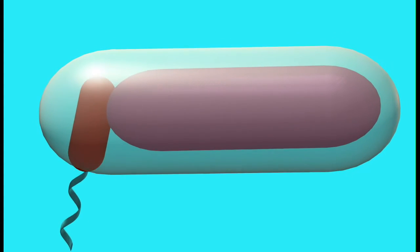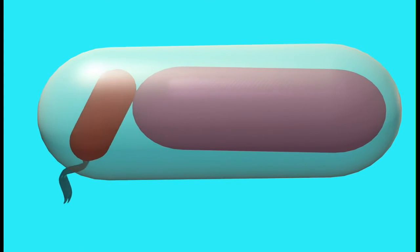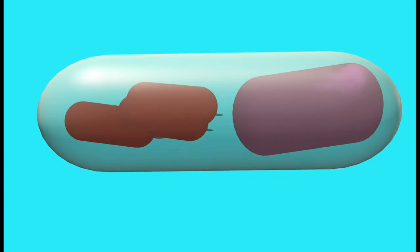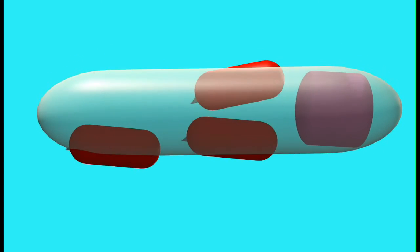which preys on other gram-negative bacteria, such as E. coli and Aquaspirillum. There are two phases of its life cycle.